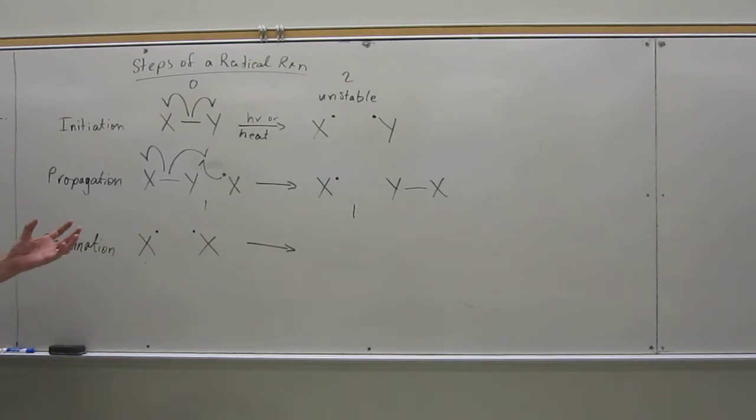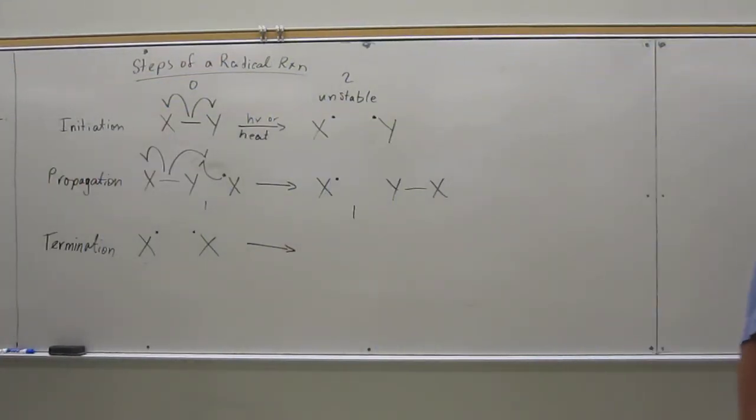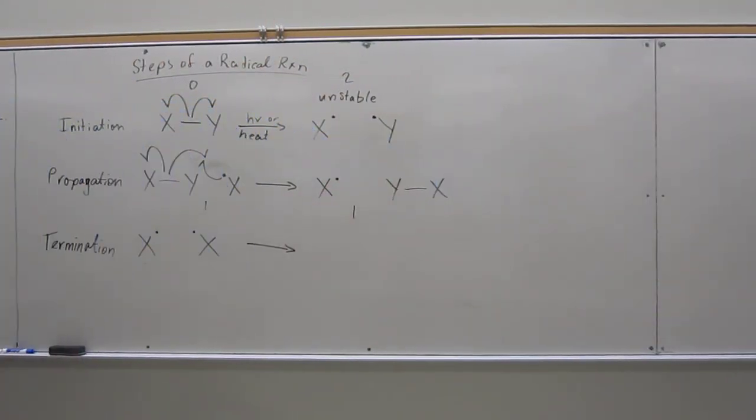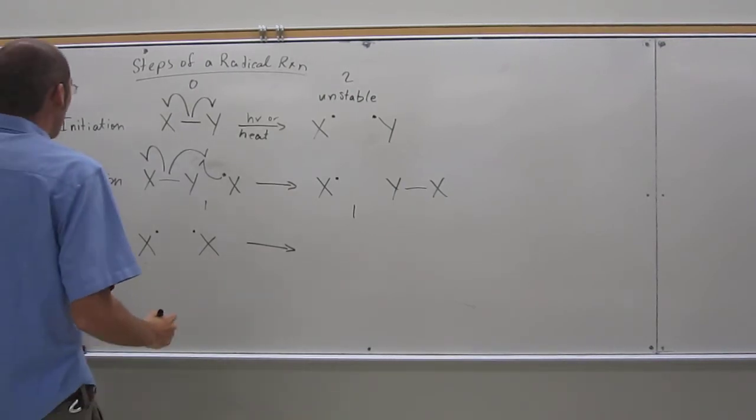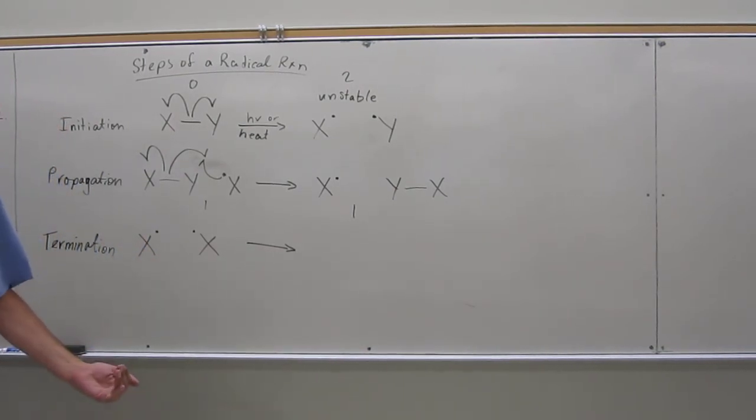But every once in a while, because there's not many radicals in your solution, only a few, they usually won't see each other. Because you can imagine how big they are relative to your solution class. So what will happen is, every once in a while, two radicals will meet up.